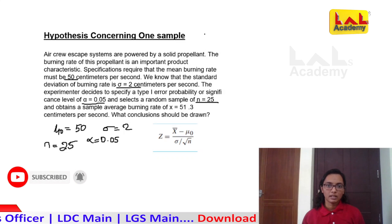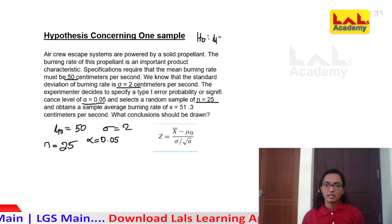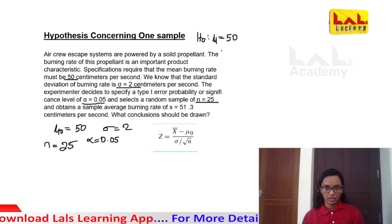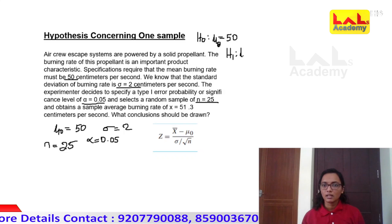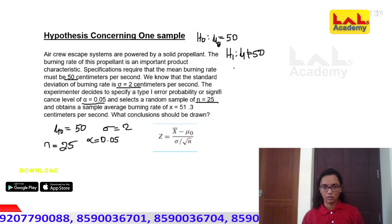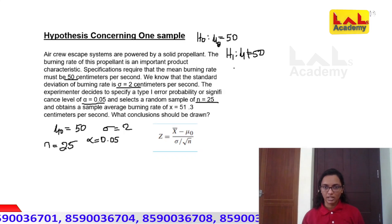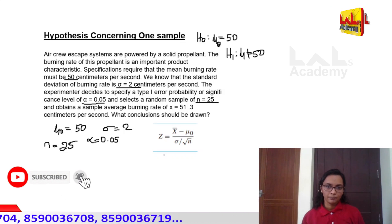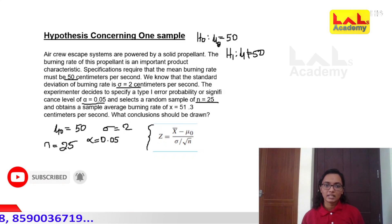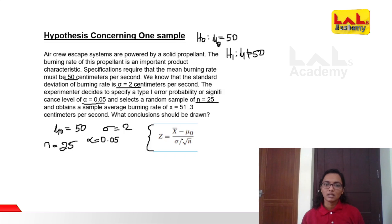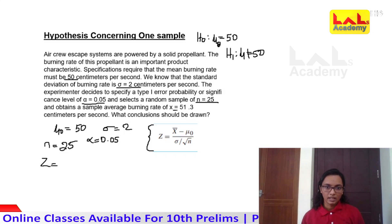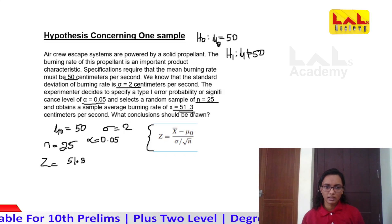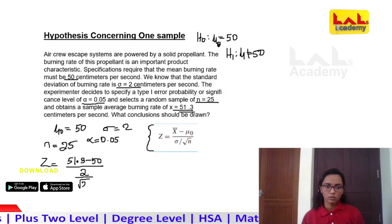What is the hypothesis? We have to check the null hypothesis that the population mean is 50 centimeters per second — that is mu-zero. If we have to check the alternate hypothesis, we check whether mu is not equal to 50. The test statistic is calculated as x-bar minus mu-zero divided by sigma divided by root n: 51.3 minus 50 divided by 2 divided by root 25.